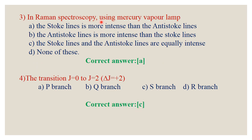Question number 3: In Raman spectroscopy using a mercury vapour lamp, which is true — the Stokes lines are more intense than anti-Stokes lines, anti-Stokes lines are more intense, or they are equally intense? The Stokes lines are more intense than anti-Stokes lines because the incident light absorbs energy from the molecule.